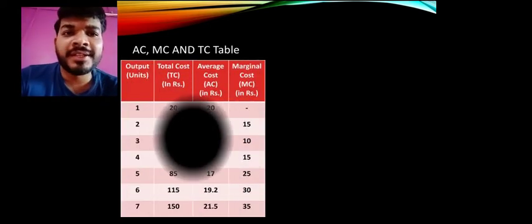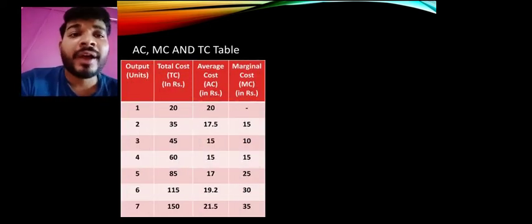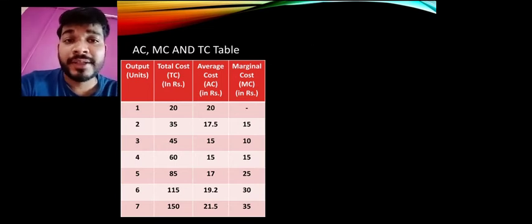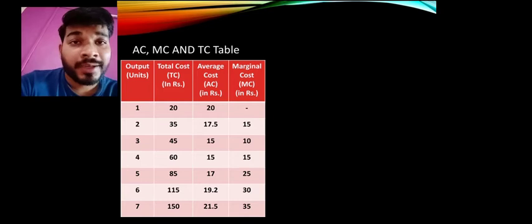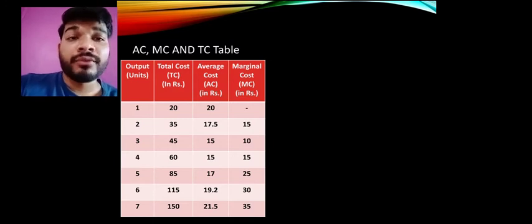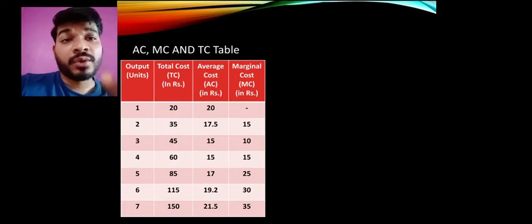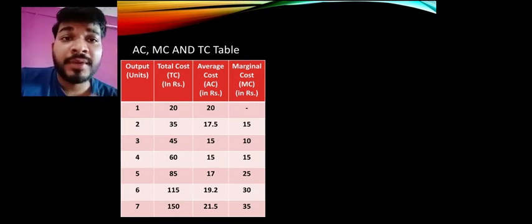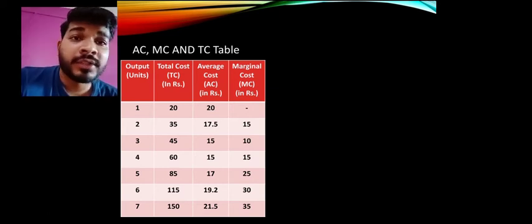To understand this better, we have a table and a diagram. Economics deals with data representation, so the table is important to remember. There are four columns: the first is output in units (from 1 to 7), the second is total cost, the third is average cost, and the fourth is marginal cost. The total cost values given are: 20, 35, 45, 60, 85, 115, and 150. The formula for average cost is total cost divided by total output.